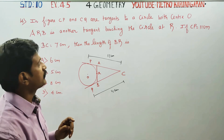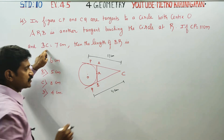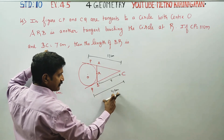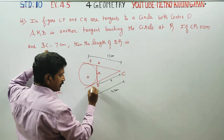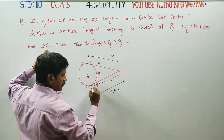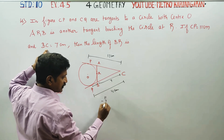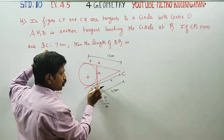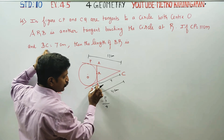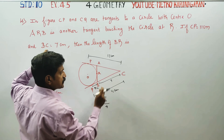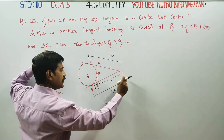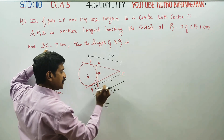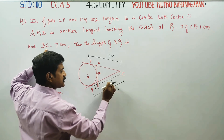CQ is equal to 7 and BC is equal to 7. CP is equal to 11, and CP can be split: 4 plus 7 is 11.